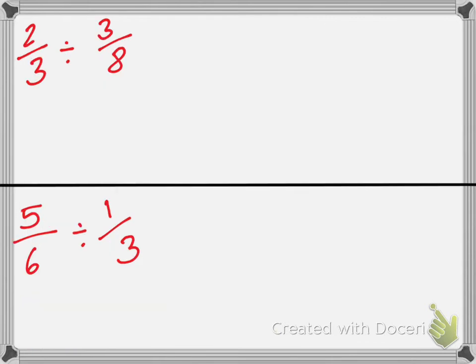I want you guys to solve these two. For this first problem, Lucas — I'm going to cross-cancel the two and the eight into a one and a four, and get rid of these and turn them into a one and a one. Is that legal? No.